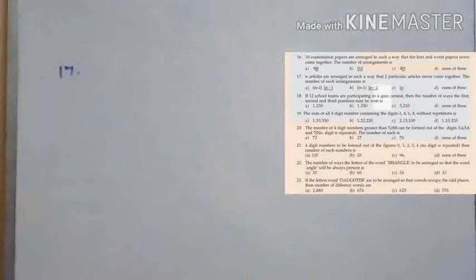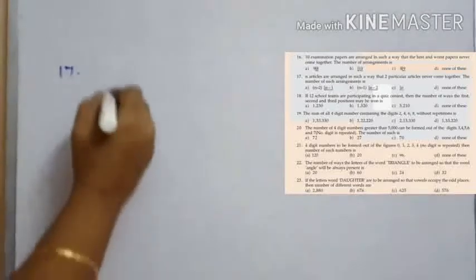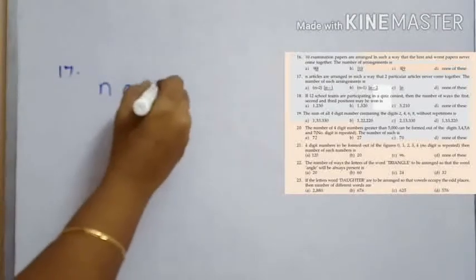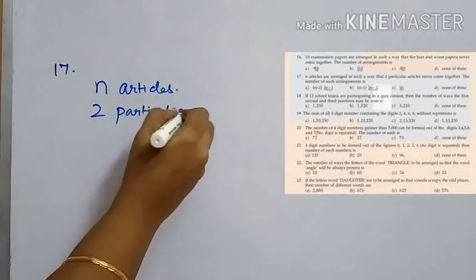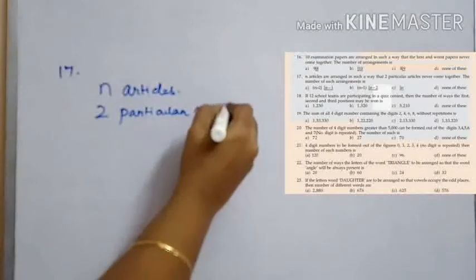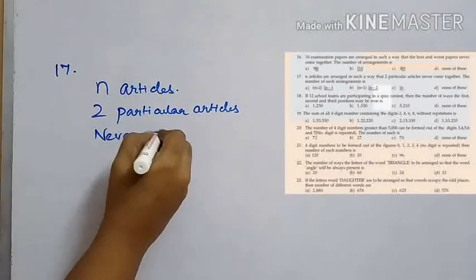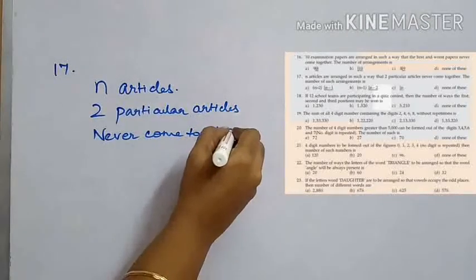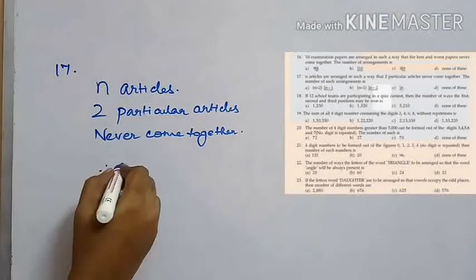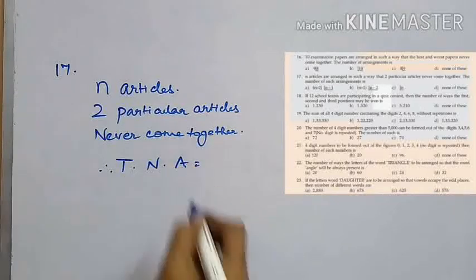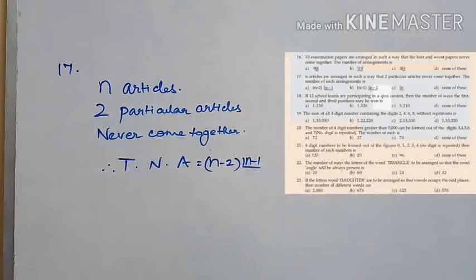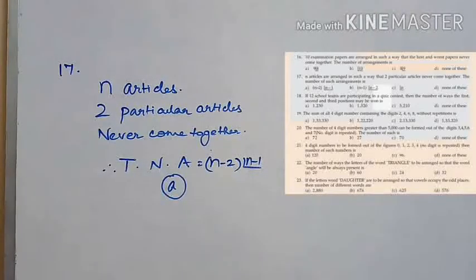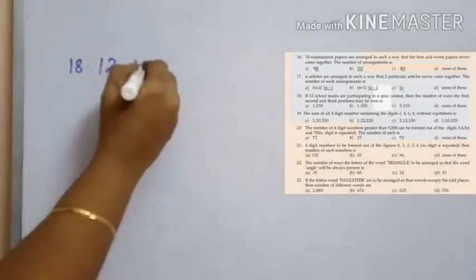The next question: n articles are arranged such that two particular articles never come together. The number of such arrangements is — this is similar to the previous problem. The formula is n minus 2 into n minus 1 factorial. Therefore the total number of arrangements is n minus 2 into n minus 1 factorial, which is option A.